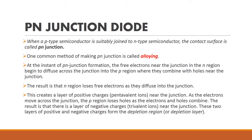First, let us see what is a P-N junction and how it is created. When a P-type semiconductor and an N-type semiconductor is joined together at the contact surface, it is called a P-N junction.